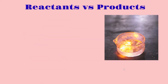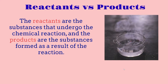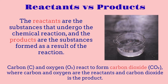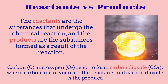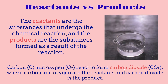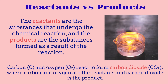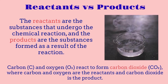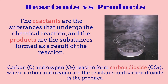Now, what is the difference between reactants and products? The reactants are the substances that undergo the chemical reaction, and the products are the substances that are formed as a result of the reaction. For example, if we have carbon and oxygen, when they react they form carbon dioxide: C + O₂ makes CO₂. Carbon and oxygen are the reactants because they go into the reaction, and carbon dioxide is the product because that's the result we get.